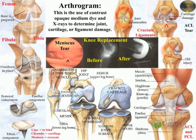Here we see the articulation of the femur with the tibia. In between, you see the individual pads referred to as cartilage. Cartilage are buffers or pads between bones. Remember, chondral means cartilage, and chondritis would be an inflammation of these cartilages.